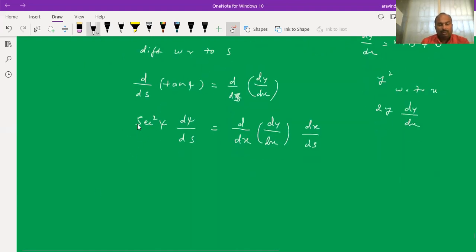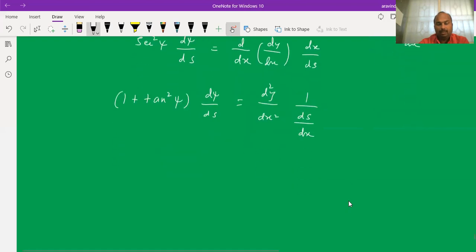Now, using the trigonometric identity, secant square psi can be written as 1 plus tan squared psi times d psi by ds. That equals d squared y by dx square times, this I will write as 1 by ds by dx, I will write dx in the denominator.